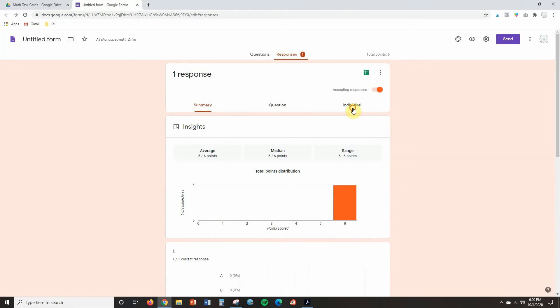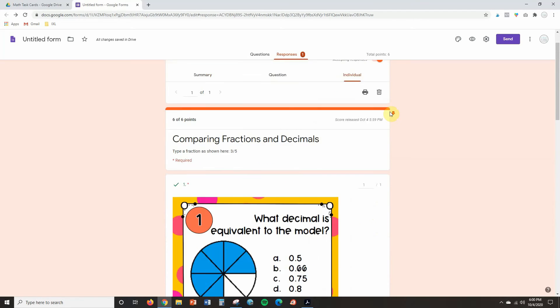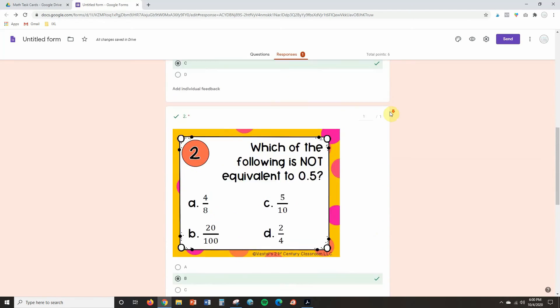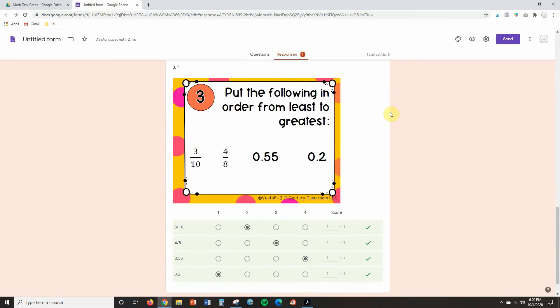You can also look at it by individual students if you assign it through Google Classroom which is very helpful as well. Alright, so there you have it. That is how you take your task cards that you have and you make them digital.